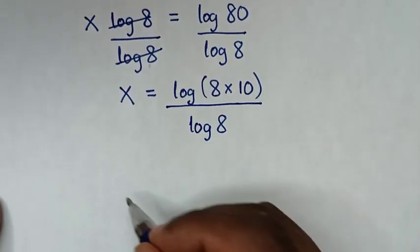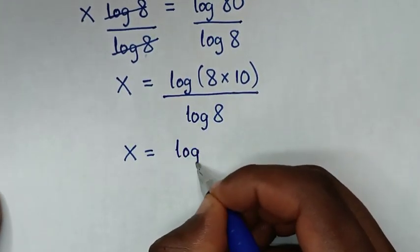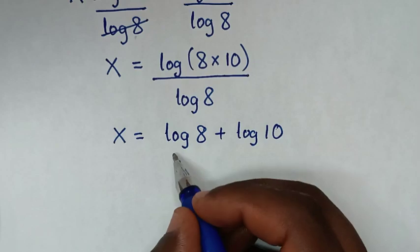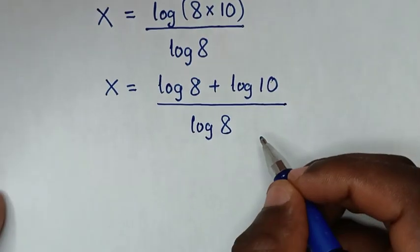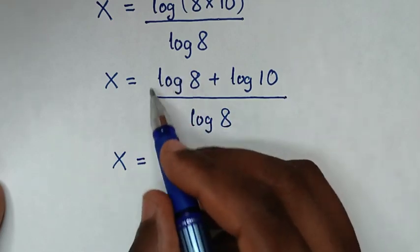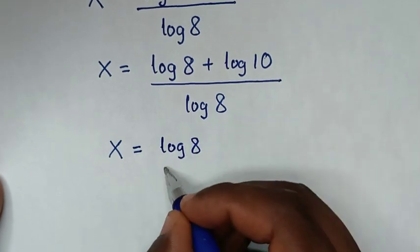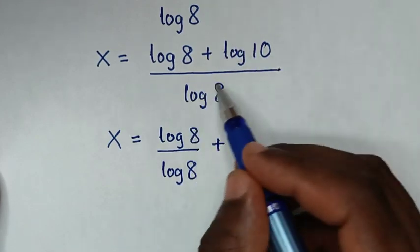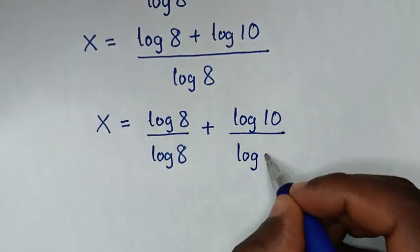Then, in the next step, it will be x is equal to — log of 8 times 10 is the same as log of 8 plus log of 10 — all over log of 8. Then, in the next step, we divide log of 8 and log of 10 separately over log of 8, giving log of 8 over log of 8 plus log of 10 over log of 8.